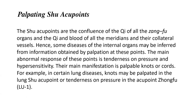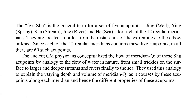The five shu is the general term for a set of five acupoints: Jing well, Jing spring, Shu, Jing river, and He sea, for each of the 12 regular meridians. Since each of the 12 regular meridians contains these five acupoints, in all there are 60 such acupoints.